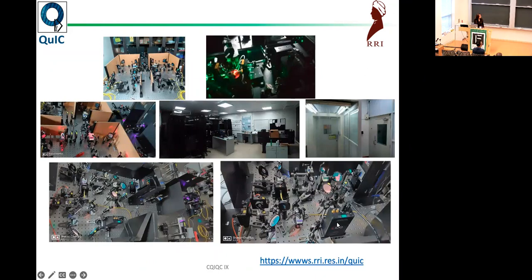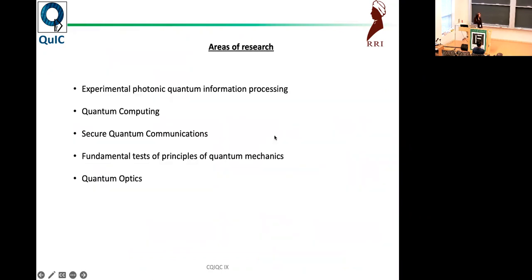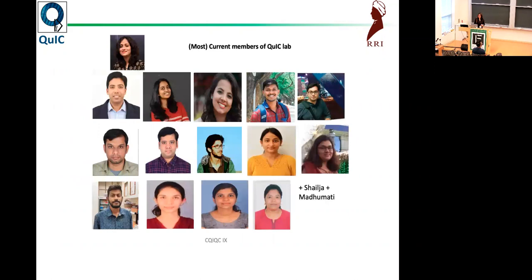The areas of research are photonic quantum information processing, quantum computing, secure quantum communications, fundamental tests of principles of quantum mechanics and quantum optics. Today I'm going to focus on the fourth one, as this experiment is more related to that. These are, of course, the people who enable things to happen in the lab.